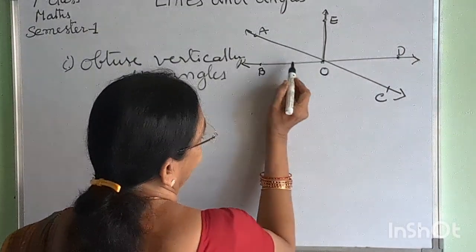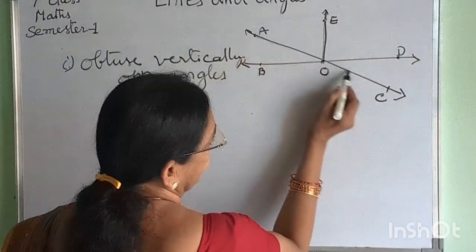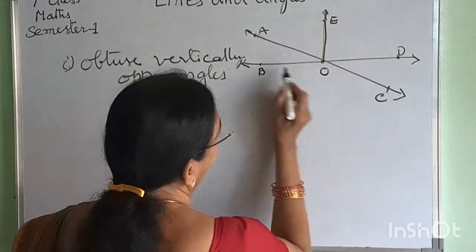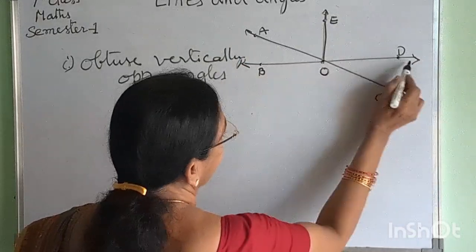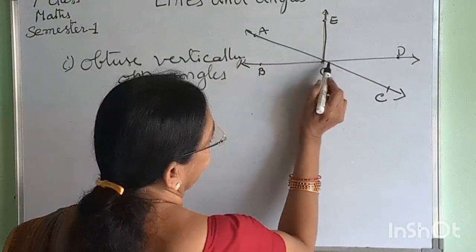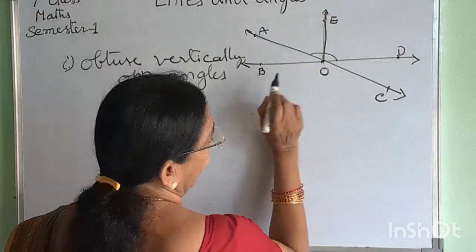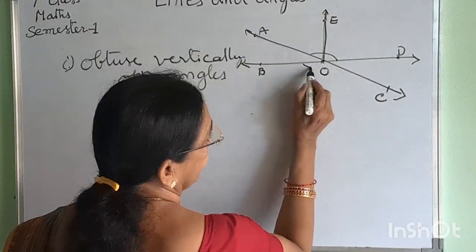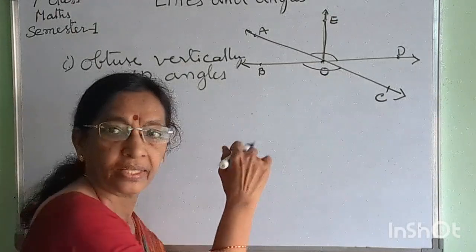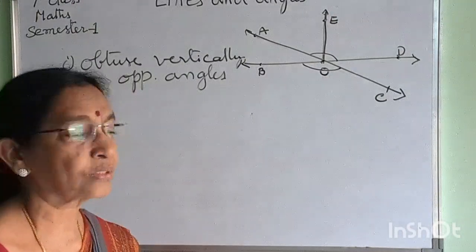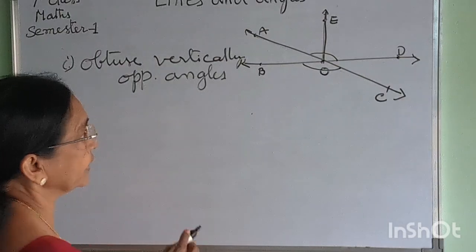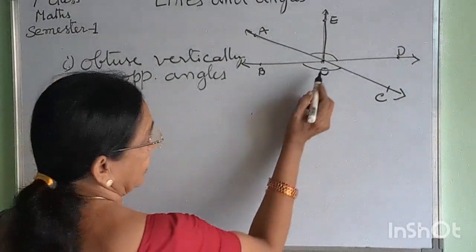Here, if we consider rays AC and BD, this angle is obtuse and the opposite angle is also obtuse. Therefore, these two are obtuse vertically opposite angles.